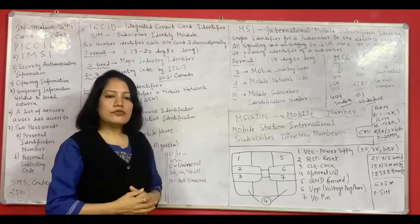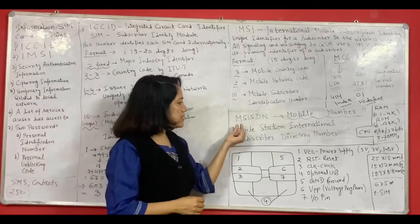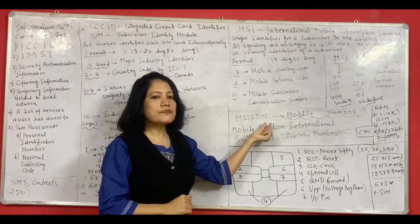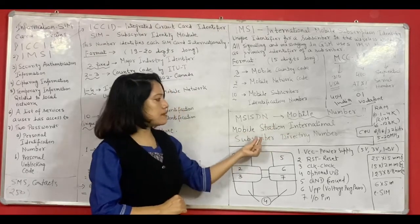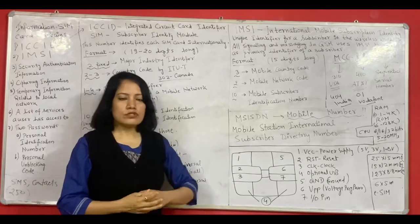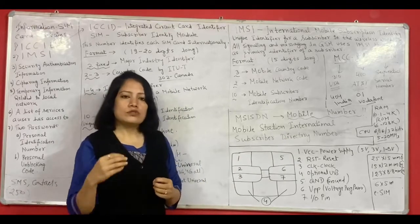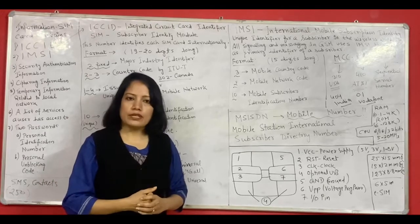Now neither of these 2 is your Mobile Phone Number. So Mobile Phone Number is basically called as MSISDN Number. And it stands for Mobile Station International Subscriber Directory Number. Now this number is basically used to call to another mobile device and set up a connection between those 2.